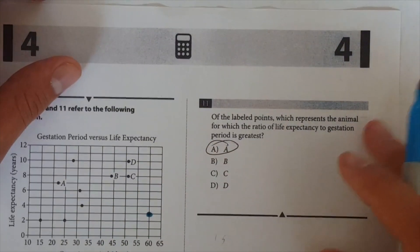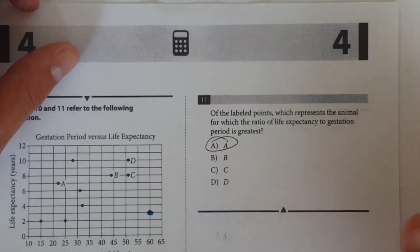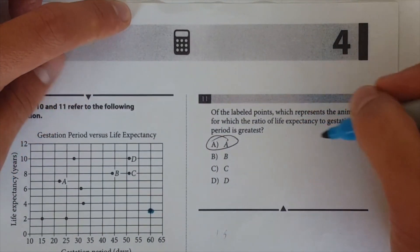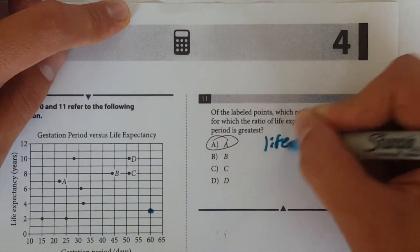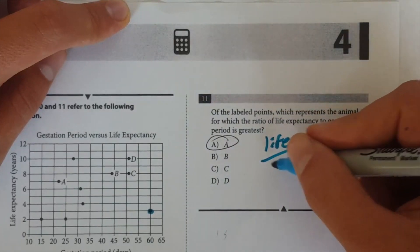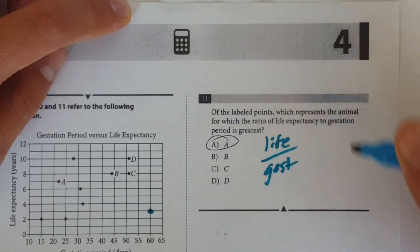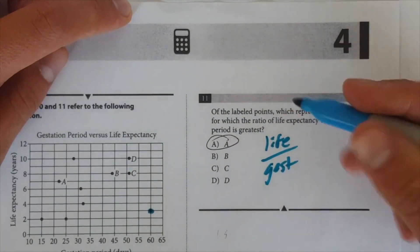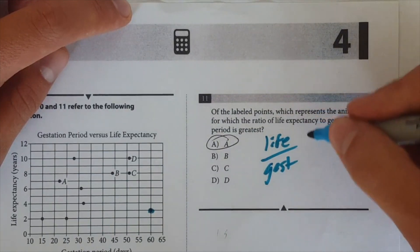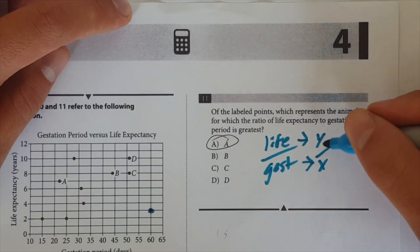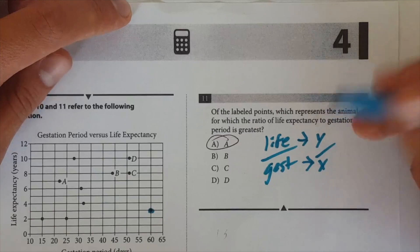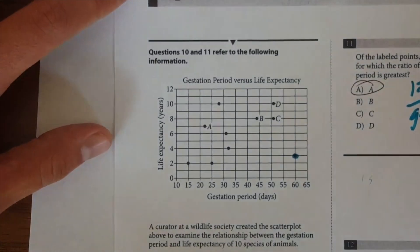Okay. Now if you go over to 11 of the label points, which represent the animal for which the ratio of life expectancy to the gestation period is the greatest, all right, so life divided by gestation is the greatest. Okay. And now what that means is that, this is essentially the y-axis and this is the x-axis. So it's going to be the one for where y divided by x is really high.